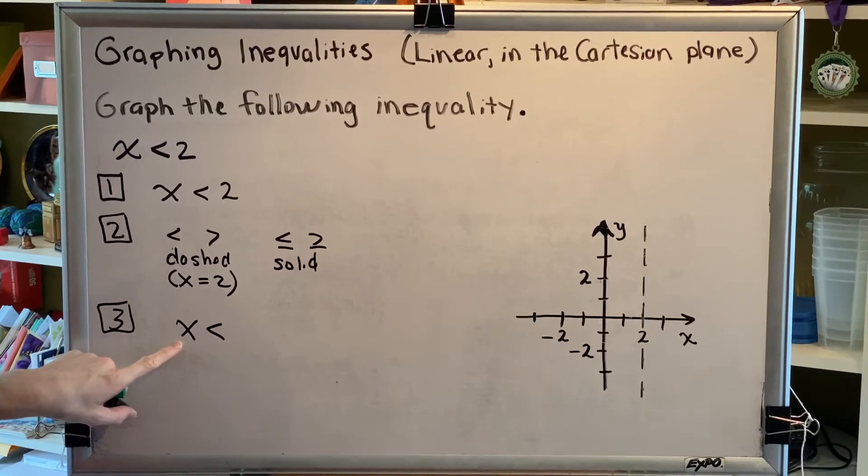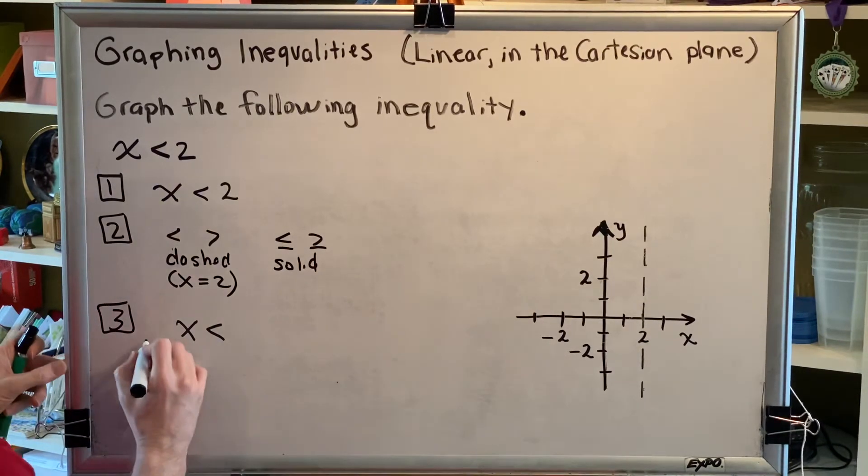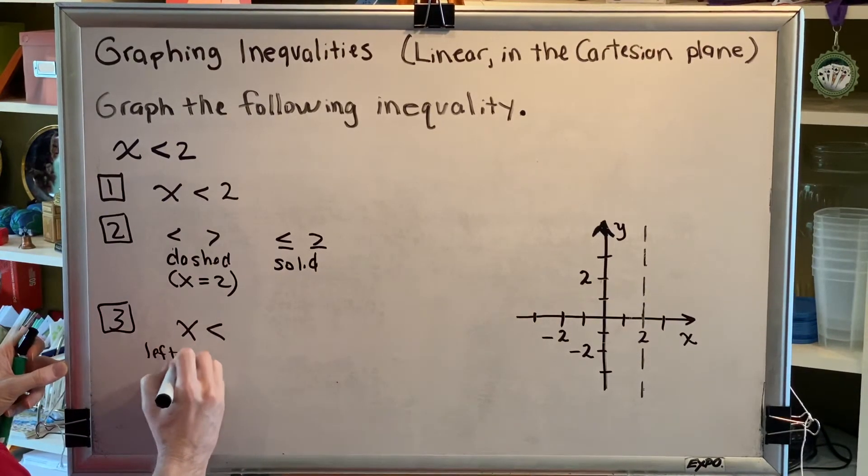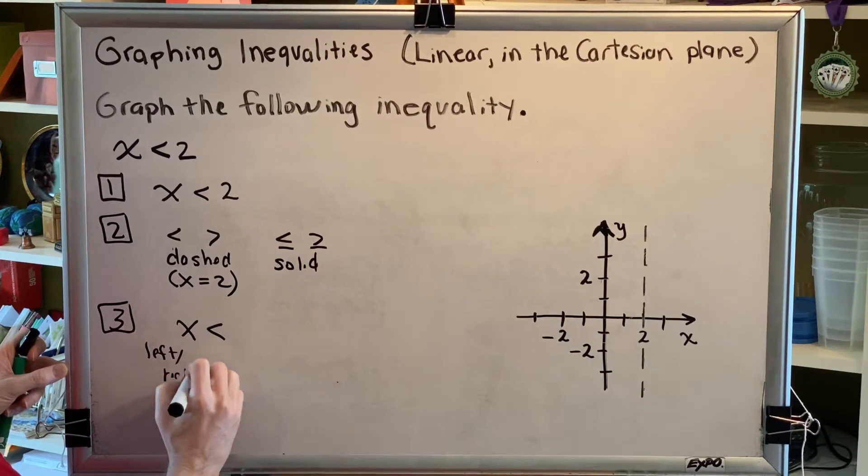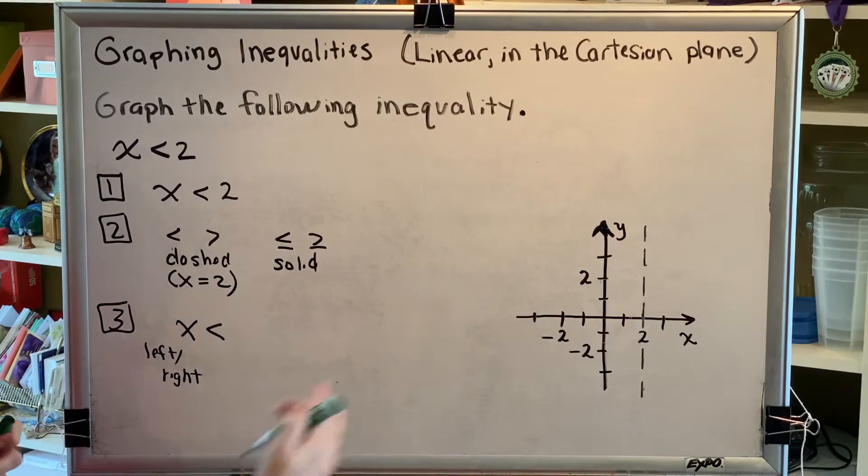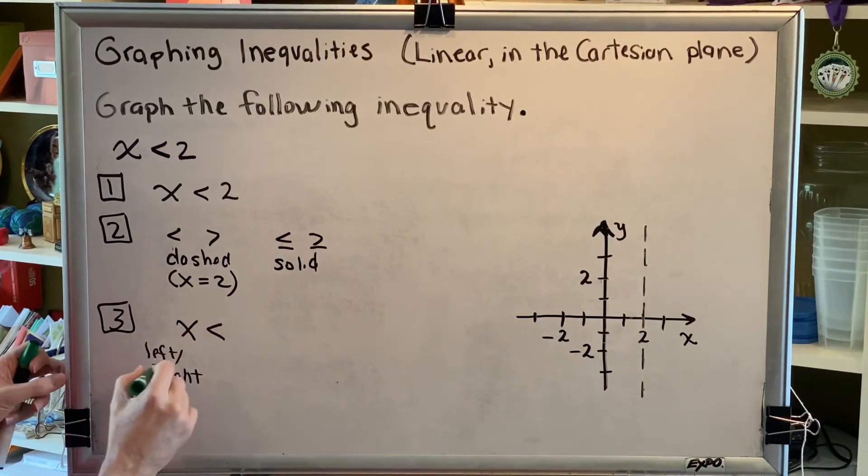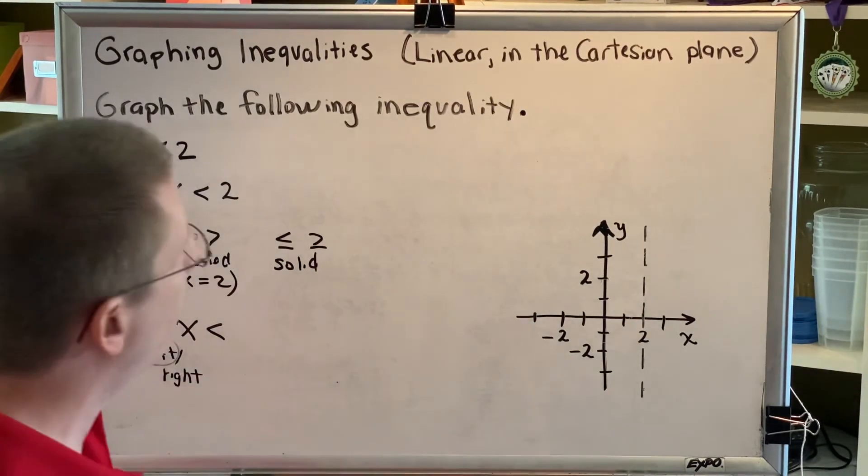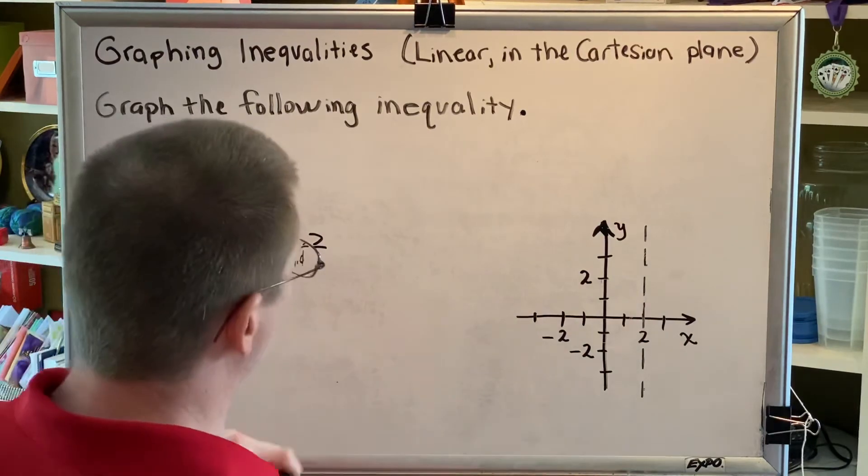So the fact that it says x means our only two choices for shading are left or right. And the fact that it says less than means that we're going to shade where the x's are less, which is to the left. So we shade to the left of our dashed line.